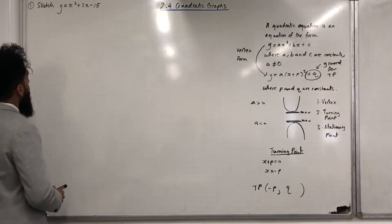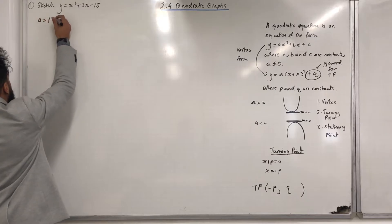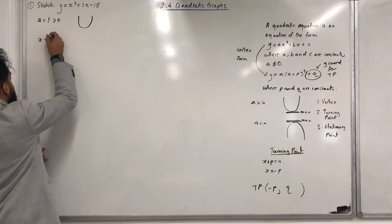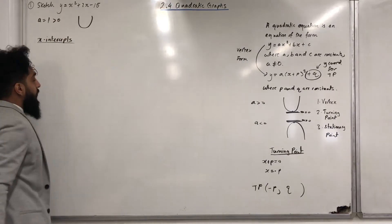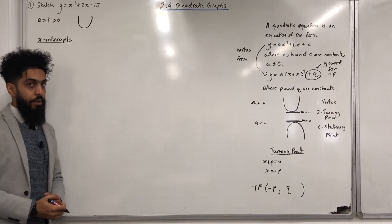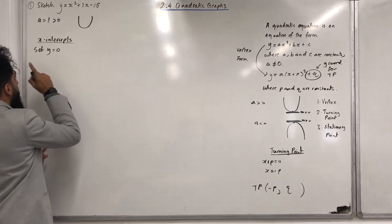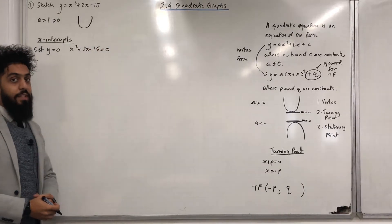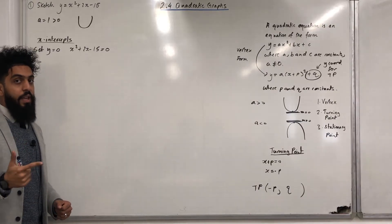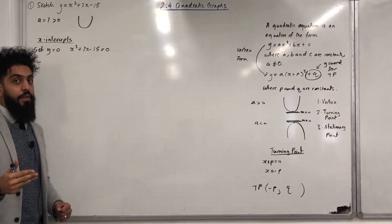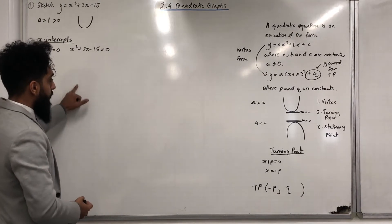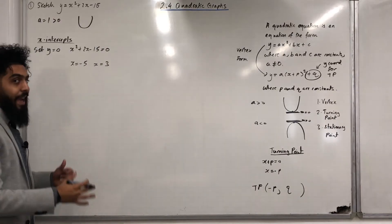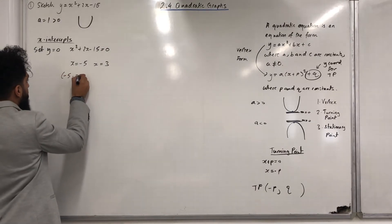The coefficient of x² is 1, which is greater than 0, so the shape of the graph will be a U-shape. To find the x-intercepts, I set y = 0, which gives x² + 2x − 15 = 0. Using the equation function on my Classwiz calculator, I get x = −5 and x = 3. So the x-intercepts are (−5, 0) and (3, 0).